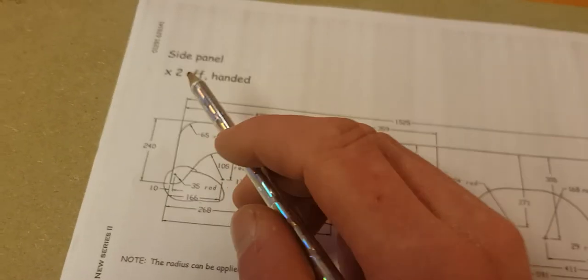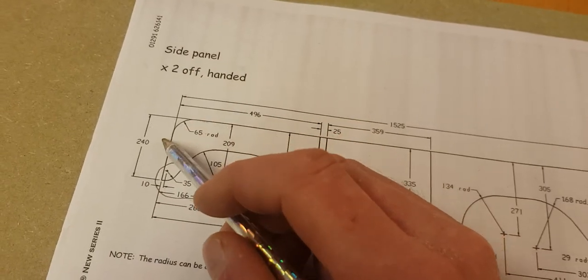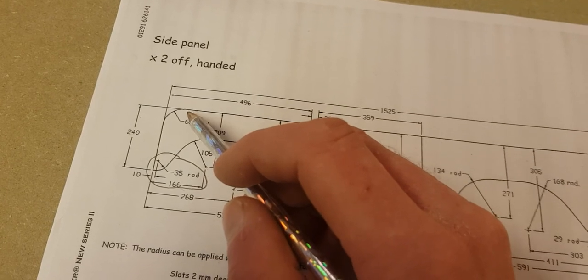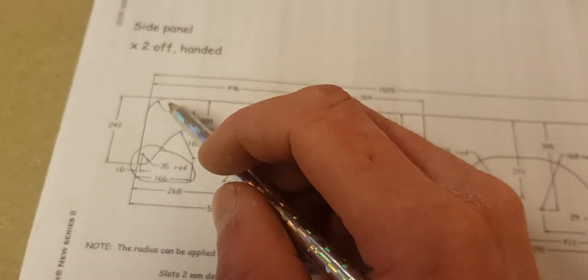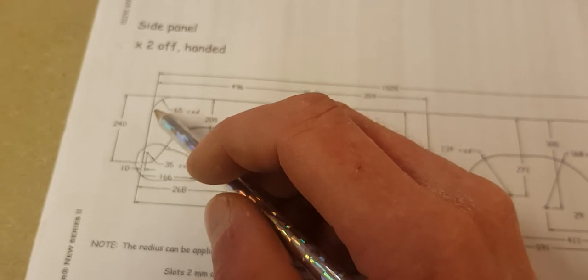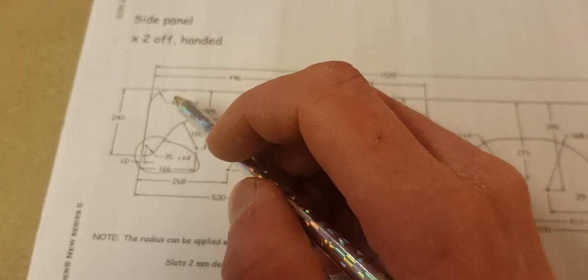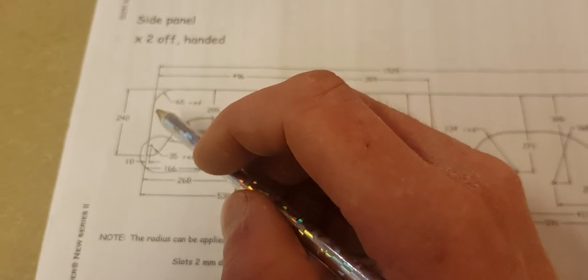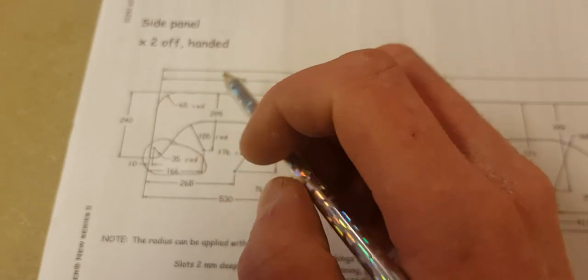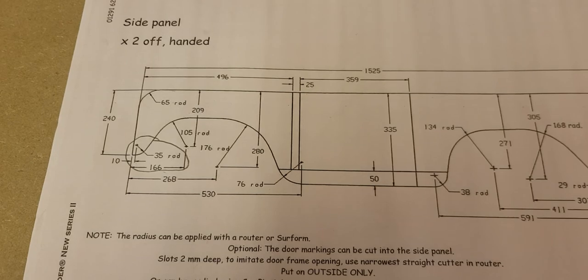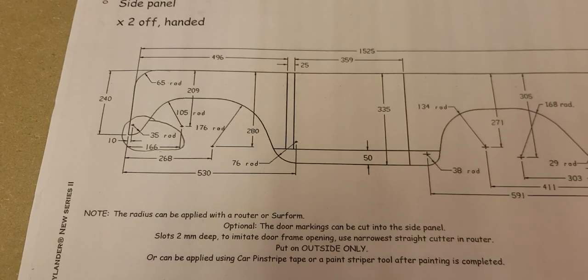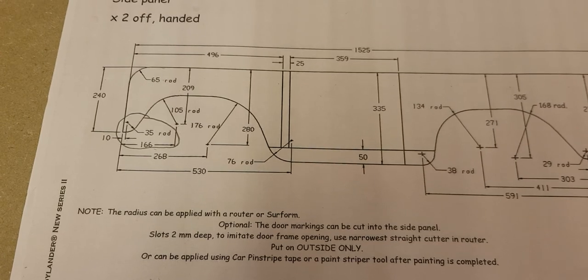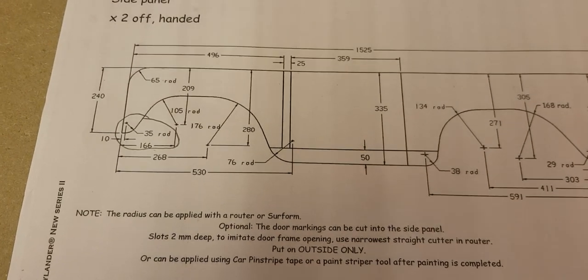Now, I struggled with this curve here. What I did was I just used a tin of beans out of the cupboard, believe it or not. And to be fair, it looks quite good. So I'll just leave it at that. I don't really think there's anything else I need to mention. Hope this helps you. Thanks very much.